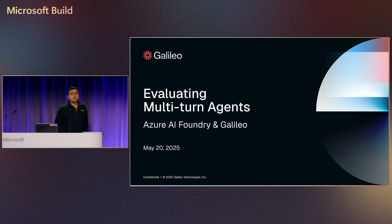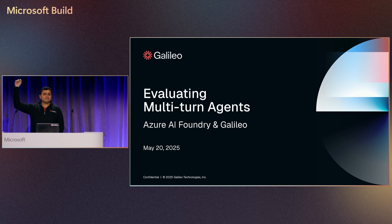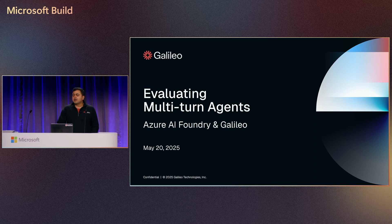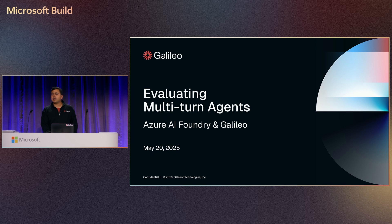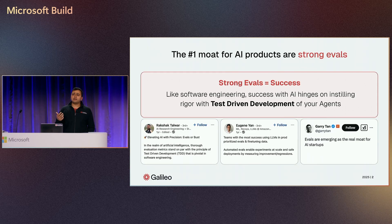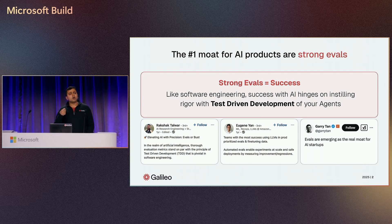Today I'm going to be focusing a little bit on multi-turn agents and some of the challenges that we have with agentic evaluations. It's the natural paradigm that we're shifting into — automation is going to happen with agents. And strong evals are actually a very strong moat for any team that is building AI applications, especially agents.